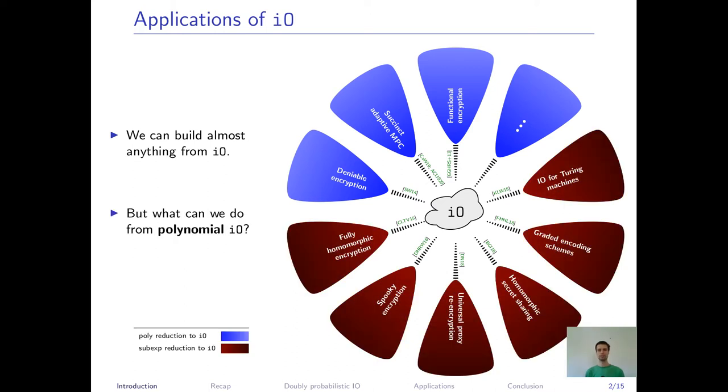However, many of those applications actually involve sub-exponential reduction loss relative to I.O. Those are highlighted in red here. We are currently still on the lookout for I.O. candidates which are based on standard assumptions in the standard model, and the security of existing I.O. candidates is still not so well understood. So it's possible that in the end, sub-exponentially secure I.O. is much harder to get than polynomially secure I.O., and that's why we are interested in avoiding this sub-exponential loss relative to I.O.